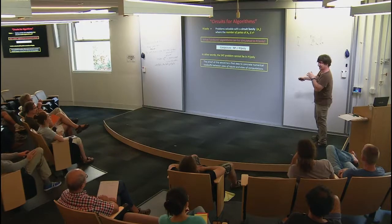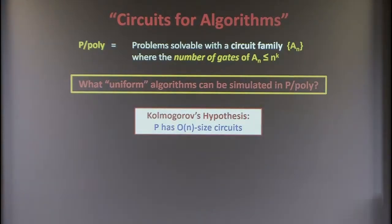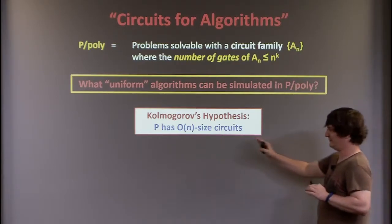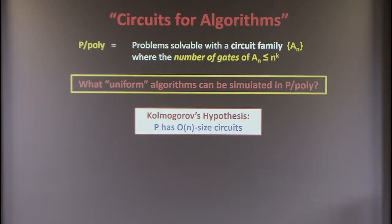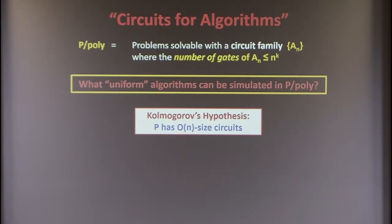Even though we think that EXP is not in P/poly, famous mathematicians thought perhaps the opposite was true. Kolmogorov actually hypothesized that polynomial time has linear sized circuits — a very scaled-down version of saying exponential time has smaller-than-exponential sized circuits. So every problem in P, even if it took n^100 or n^million time to solve, perhaps has a linear sized circuit family.